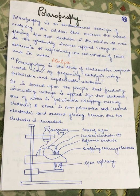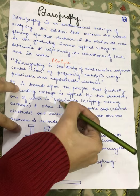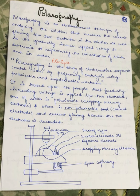The principles of polarography include the study of electroactive compounds and metal ions by performing electrolysis using polarizable and non-polarizable electrodes. It is based on the principle that gradually increasing voltage is applied between two electrodes — one polarizable, that is the dropping mercury electrode, and the other non-polarizable, like the calomel electrode — and the current flowing between the two electrodes is recorded.